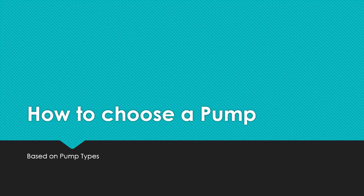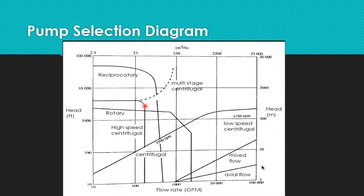So how to choose a pump based on the pump types? This is the general pump selection diagram, which is based on head and flow rate. This is head given in feet, and flow rate given in gallons per minute. This is also head given in meters and flow rate given in cubic meters per hour. If you need a high flow rate and a low head, you will choose axial flow, and similarly if you want a high head and low flow rate pump, you will choose a reciprocating pump. Mostly centrifugal pumps are used in the industries.